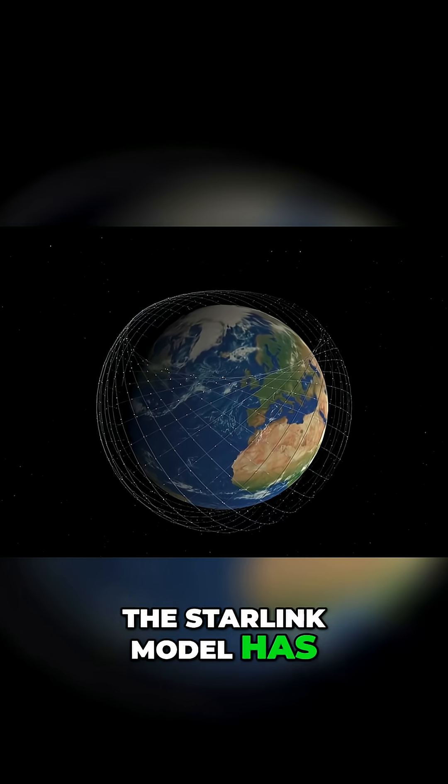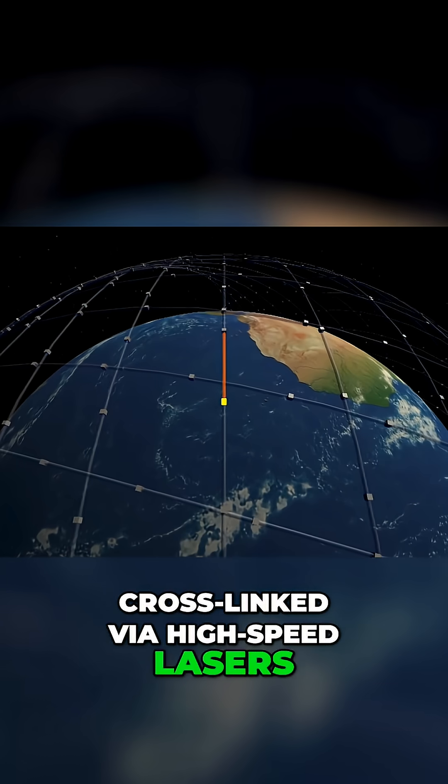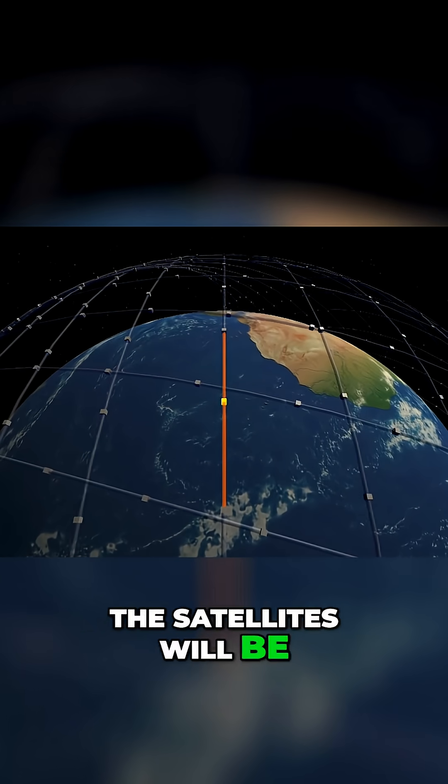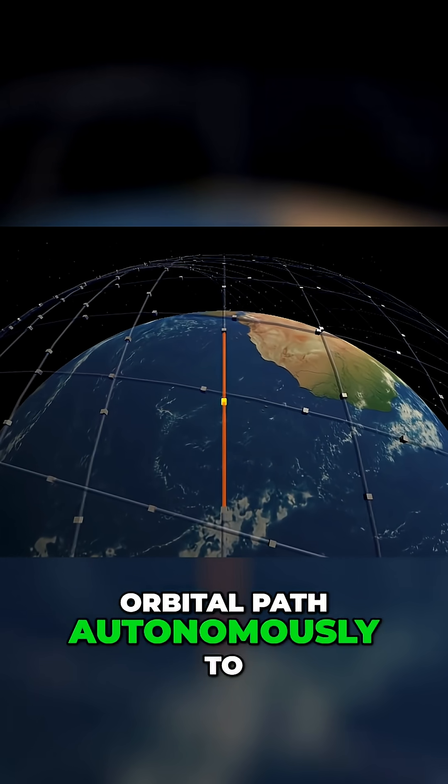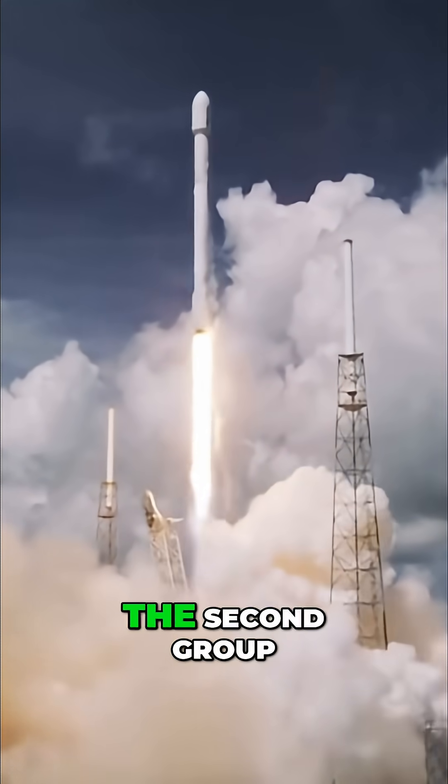The Starlink model has thousands of small satellites in low-Earth orbit, cross-linked via high-speed lasers. The satellites will be able to adjust their orbital path autonomously to avoid collisions. The company launched its first batch of test satellites in May 2019.